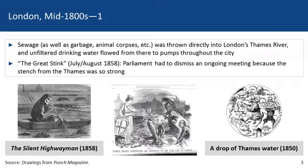This brings us to London in the mid-1800s. To explain where epidemiology as a science was founded, we visit the Thames River. At this time, sewage, as well as garbage, animal corpses, etc., were thrown directly into London's Thames River, and unfiltered drinking water flowed directly from there to pumps throughout the city. In fact, in July and August of 1858, the Great Stink was so bad that Parliament actually had to dismiss an ongoing meeting because the stench from the Thames was so strong. You can see depictions from Punch Magazine here that talk about what a drop of Thames water may look like, or how the Thames smelled to the individuals in London.